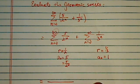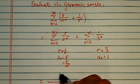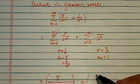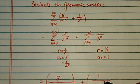And the bottom is 1 minus r, and top is just a₀, which is 5. So the summation has a complete closed form, and this one is 1 over 1 minus 1 third.